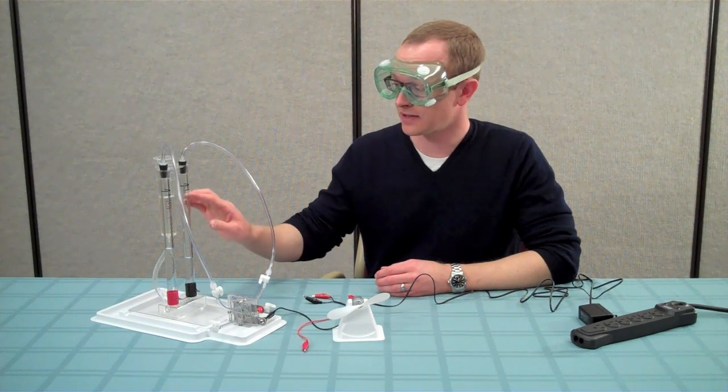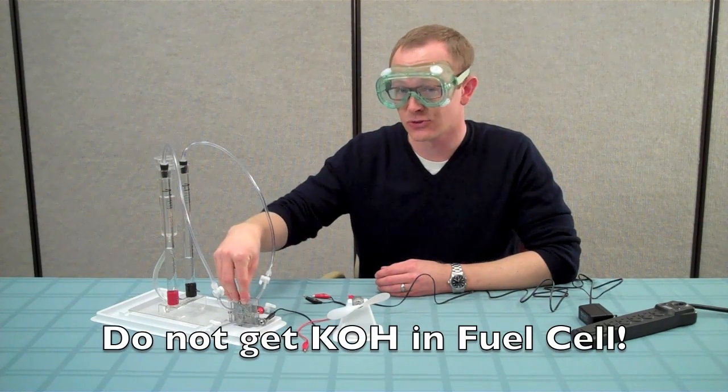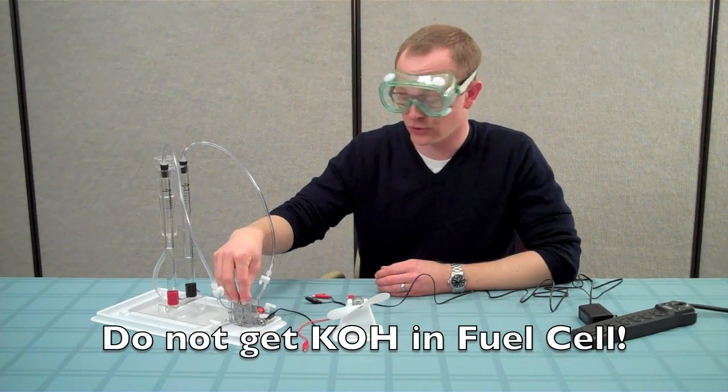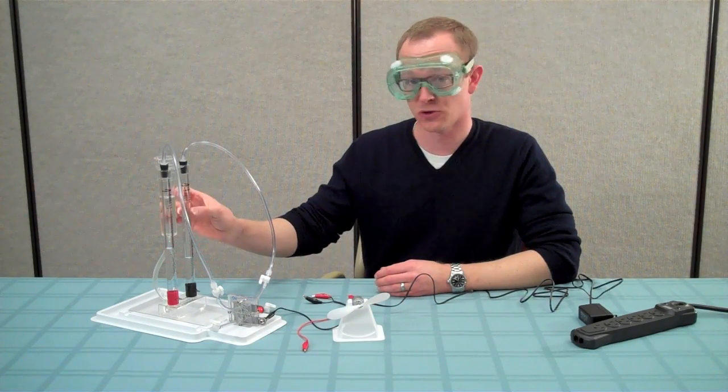If it were to rise up and get into the gas supply tubes and down into the fuel cell, it will destroy the fuel cell. So, if the level of liquid potassium hydroxide rises above the zero mark, what you want to do is close both gas supply valves.